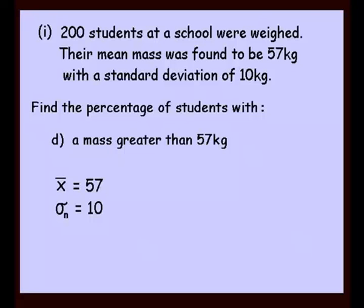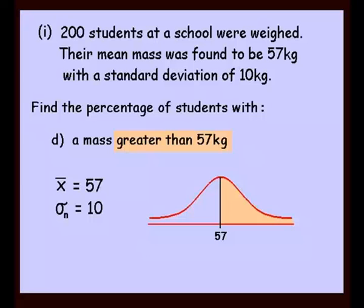Question D: find the percentage of students with a mass greater than 57 kilos. Drawing our bell curve with 57 marked in the middle, we're interested in mass greater than 57 — that's the right-hand side of the curve. The answer is exactly 50%, because in a bell curve exactly half lie to the right of the mean and exactly half to the left. So 50% have a mass greater than 57 kilos.